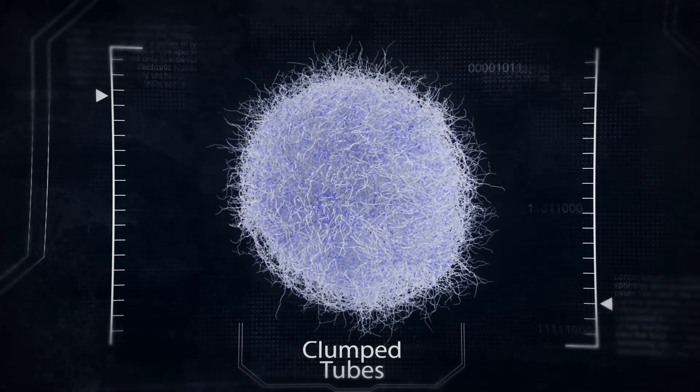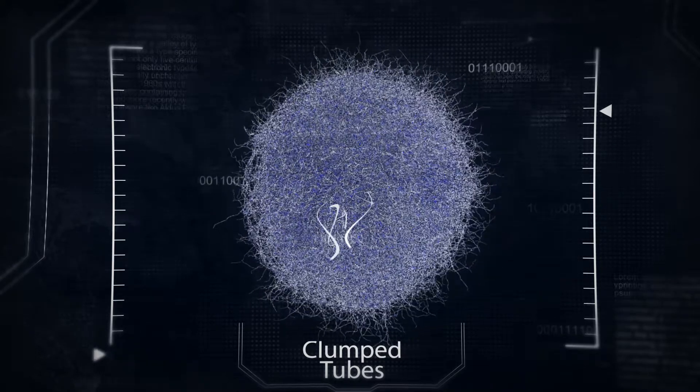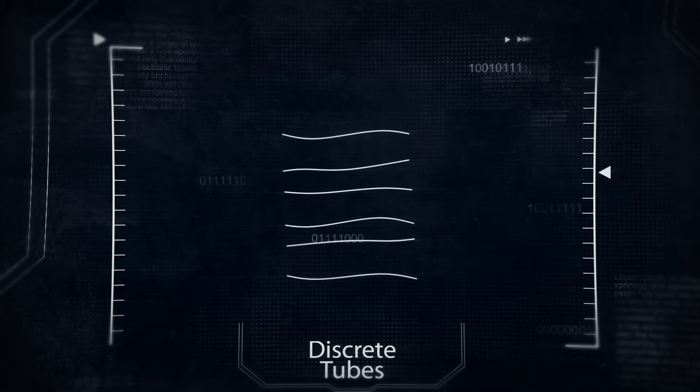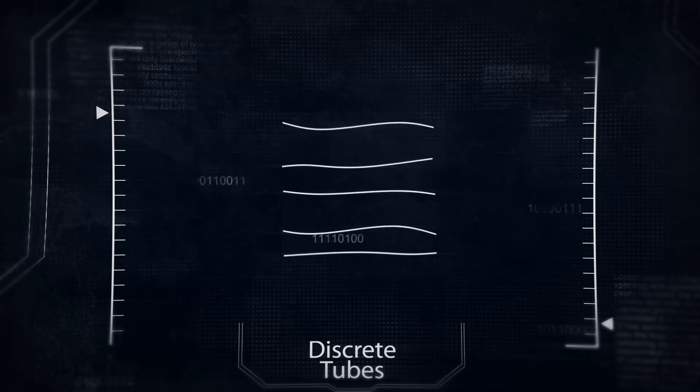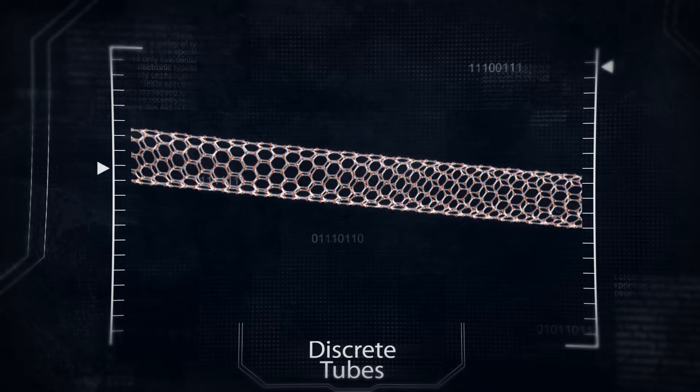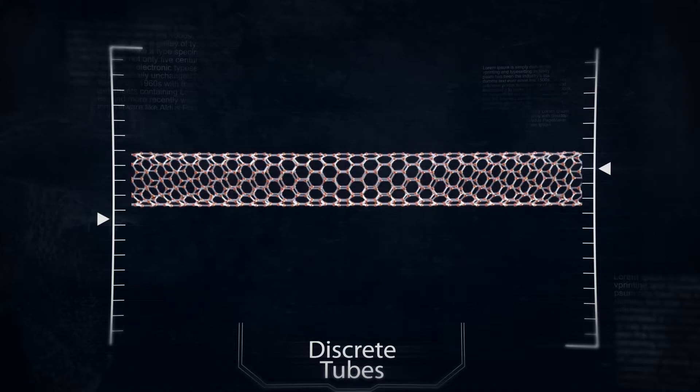McNano's proprietary technology detangles and separates CNTs into discrete tubes. The resulting discrete tubes can deliver previously unattainable properties. We do this by adding molecules to the sidewalls that improve material properties and molecules that add properties to the tubes.